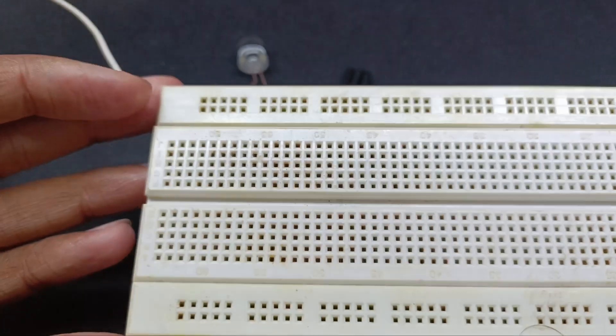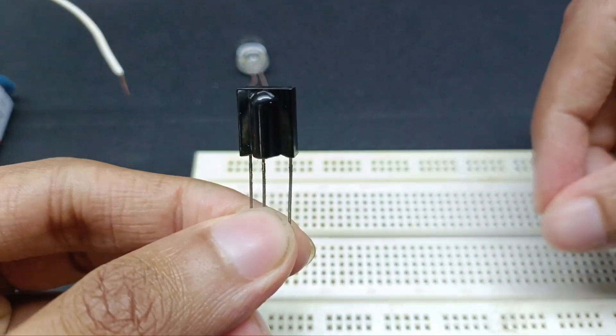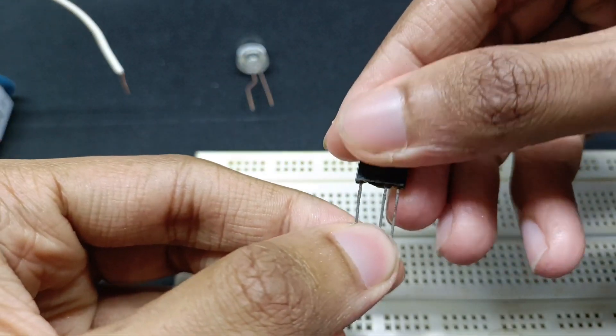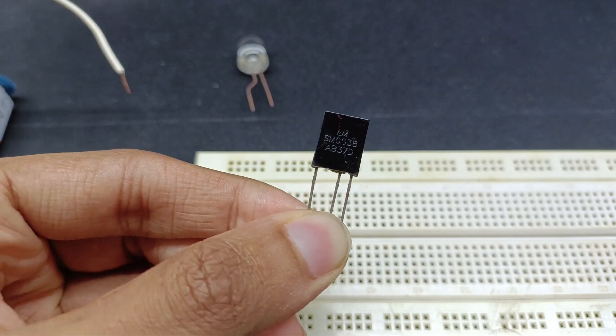You will need a breadboard or a circuit board, a TSOP1738 IR resistor. This resistor has three pins. You will need a LED and a 9V battery with a battery clip to connect the wires on the breadboard.